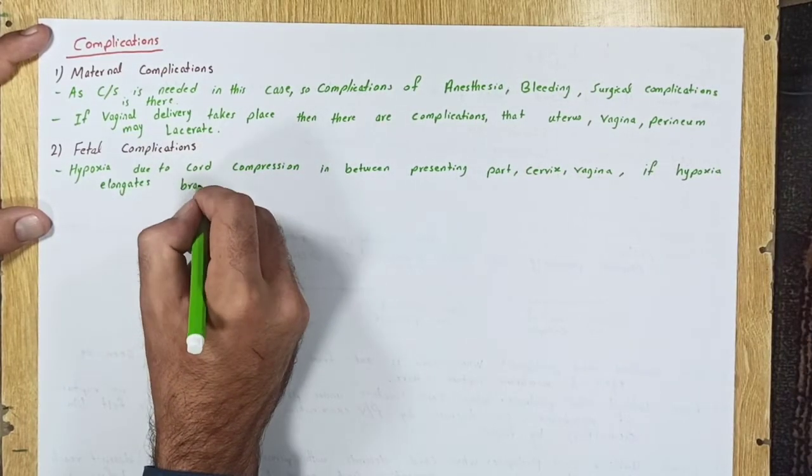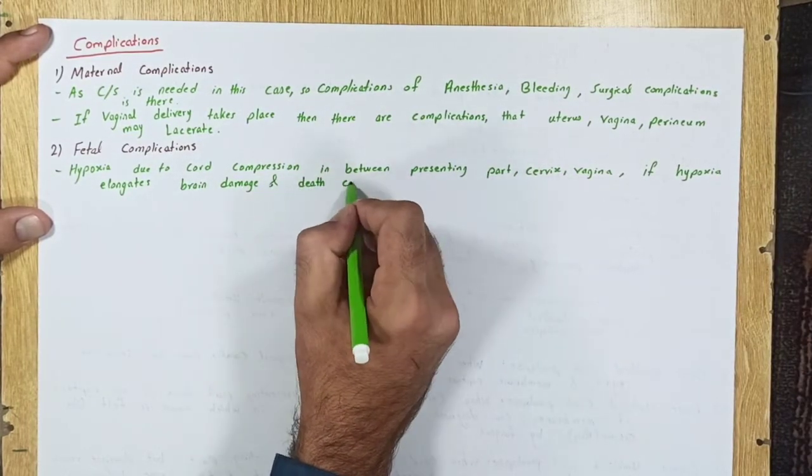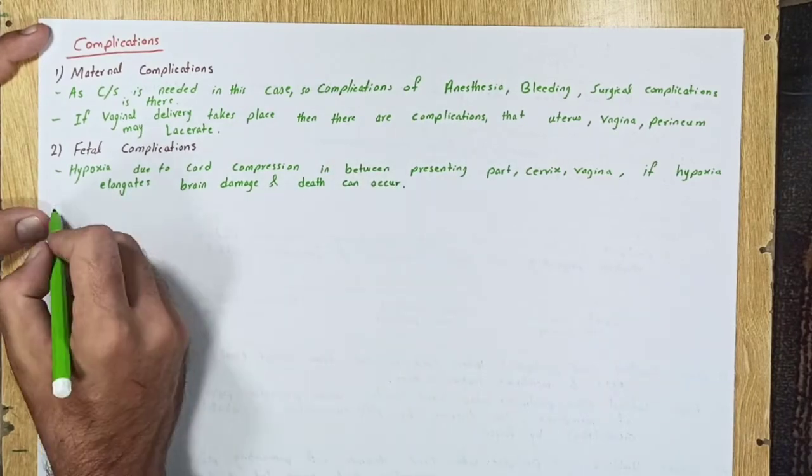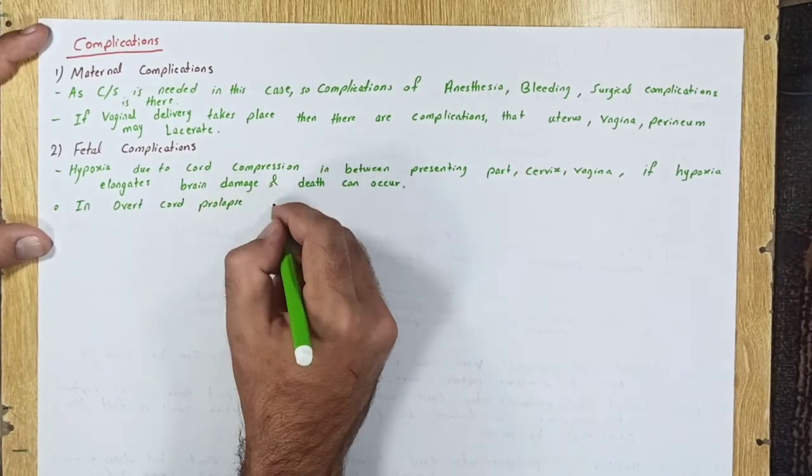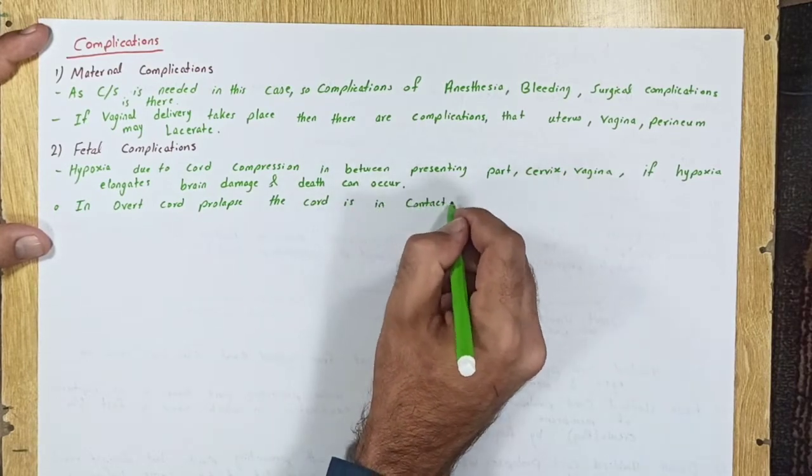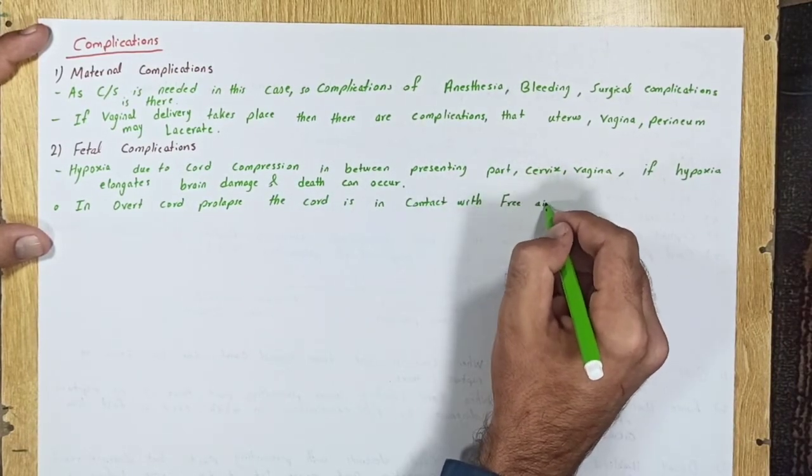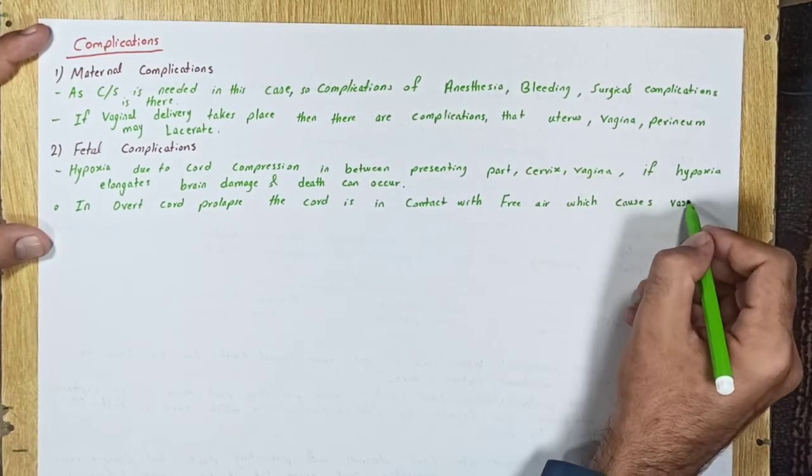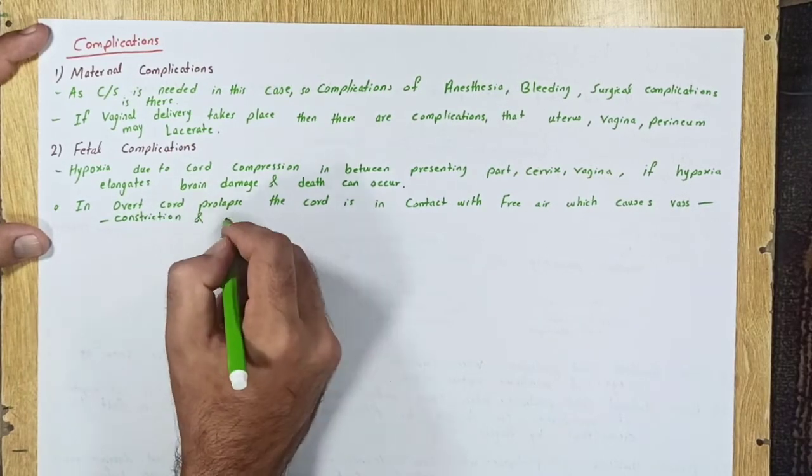In overt cord prolapse, the cord is in contact with free air, which causes vasoconstriction and then hypoxia takes place.